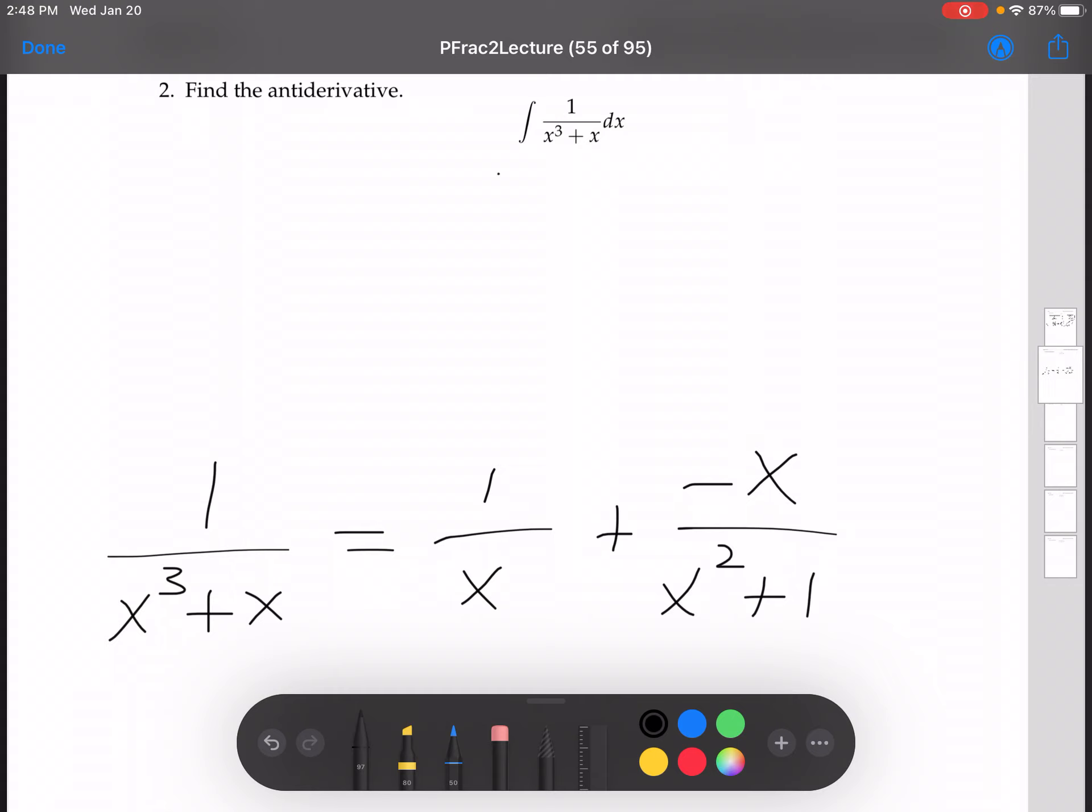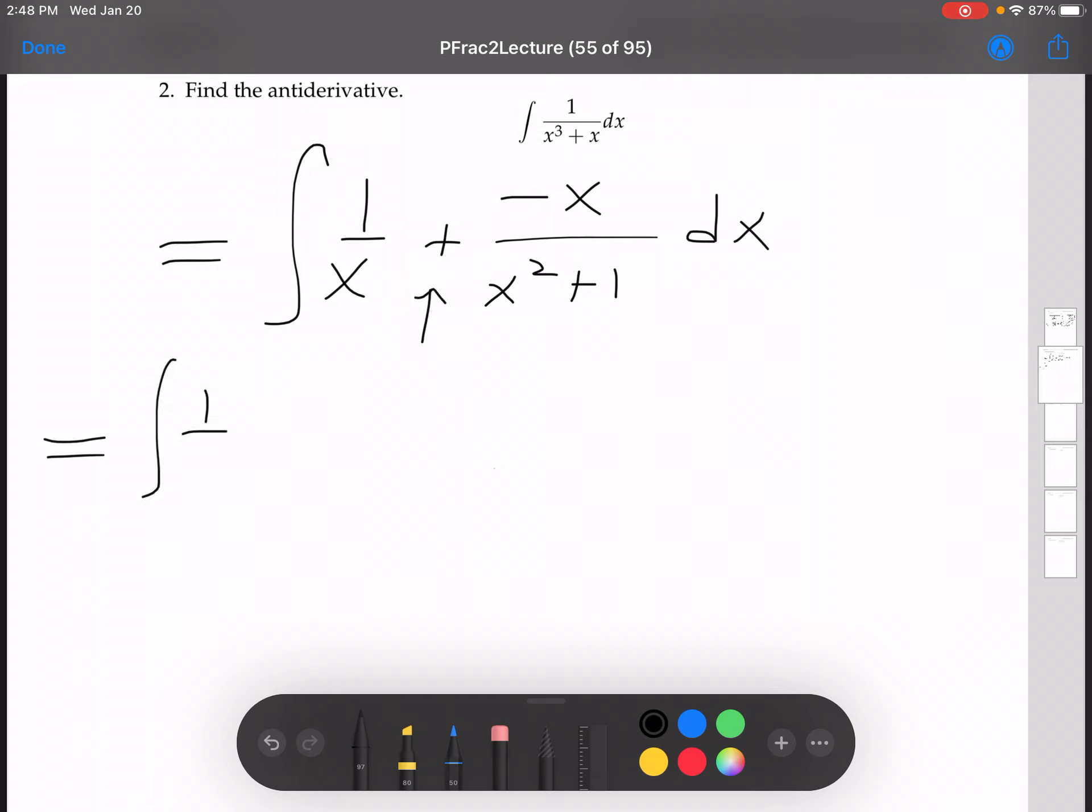Okay, so the integral, so working on this guy now, this is equal to the integral of 1 over x plus negative x over x squared plus 1 dx. We can split over the sums, 1 over x dx plus integral negative x over x squared plus 1.